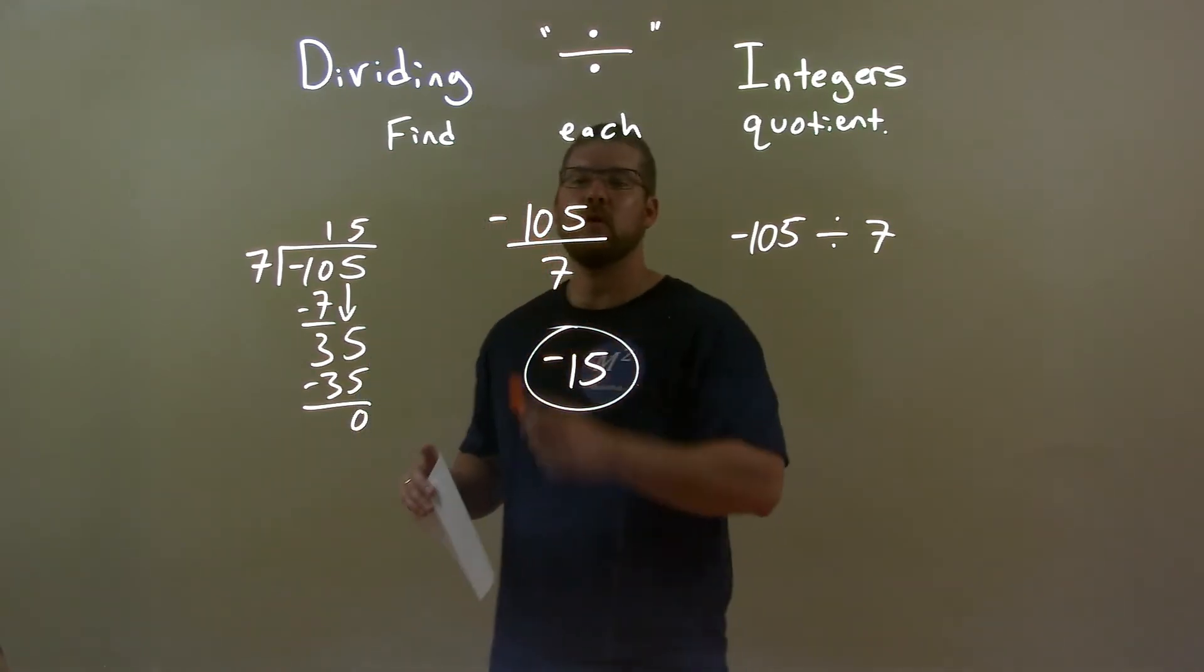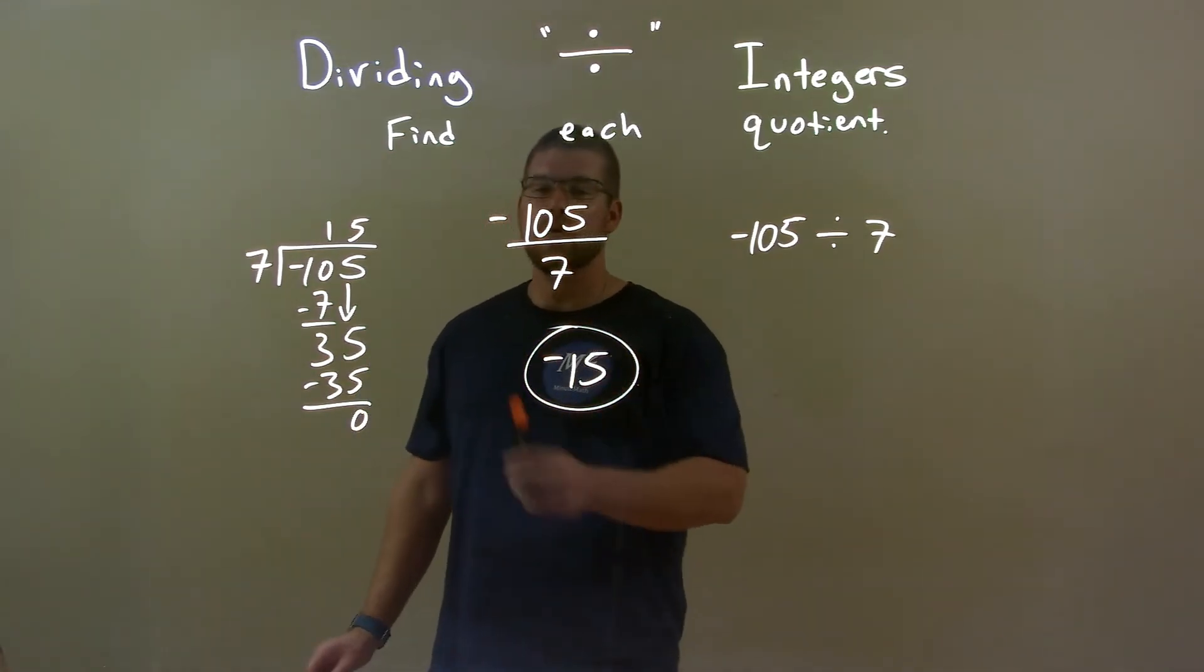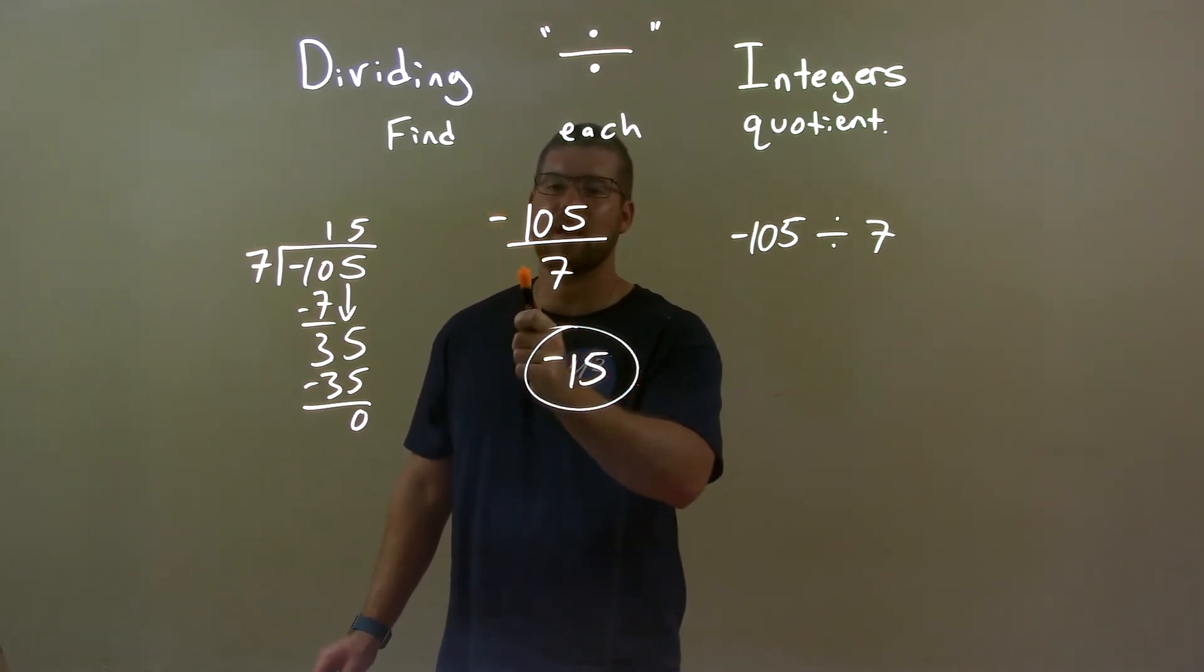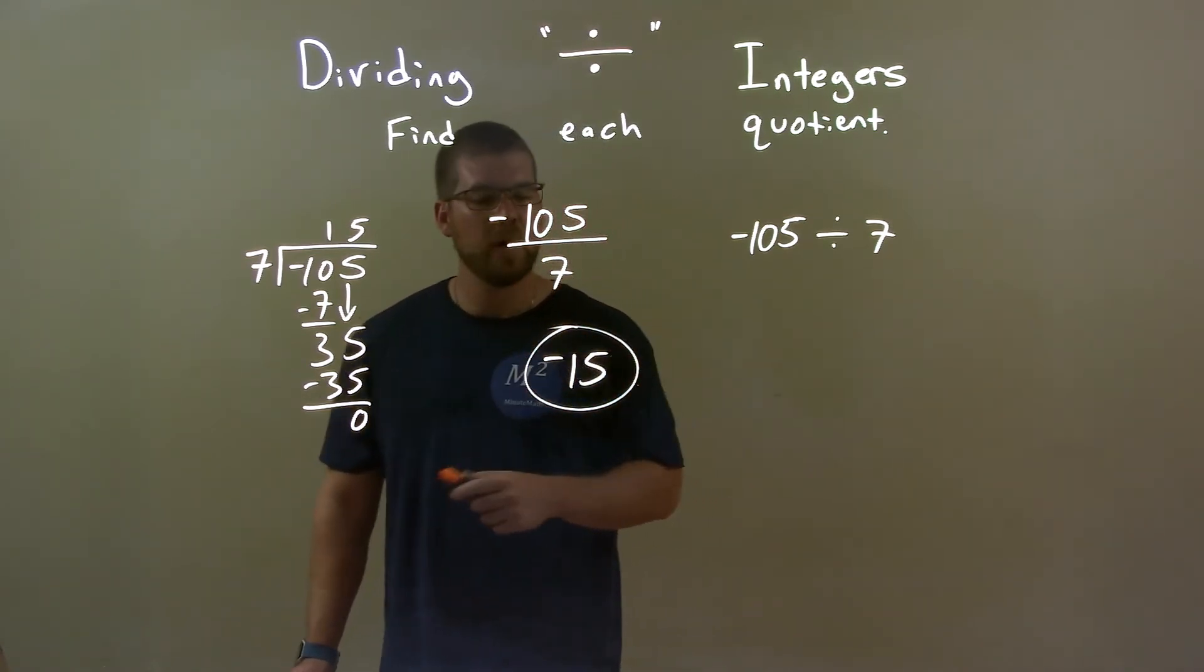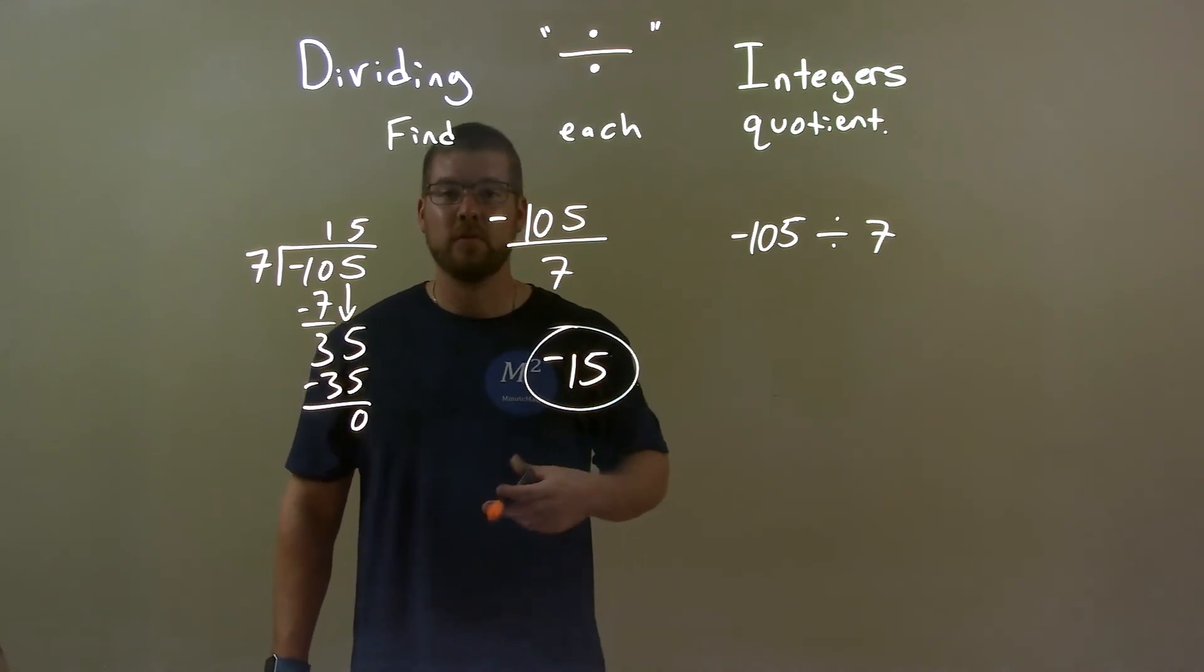So, quick recap. We're given negative 105 divided by 7. Well, we know 7 goes into 105, 15 times, and a negative divided by a positive is a negative. So, final answer here, negative 15.